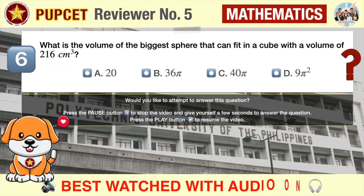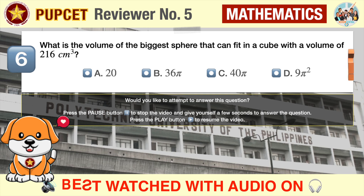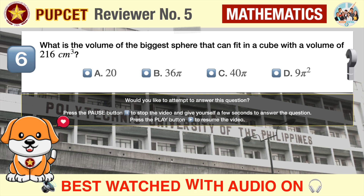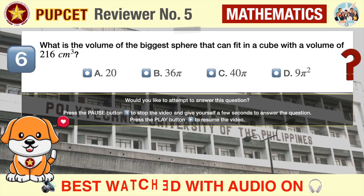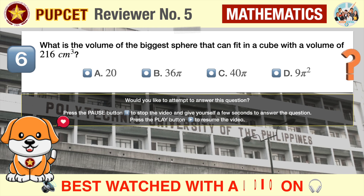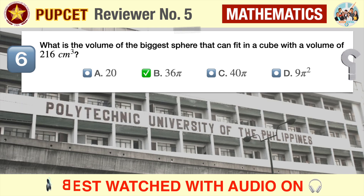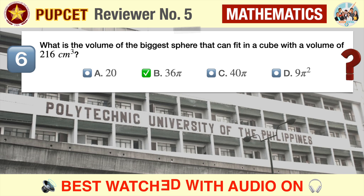Question number six: what is the volume of the biggest sphere that can fit in a cube with a volume of 216 cubic centimeters? A) 20, B) 36π, C) 40π, D) 9π squared. The correct answer is B: the volume of the biggest sphere that can fit into a cube with volume 216 cubic centimeters is 36π cubic centimeters.